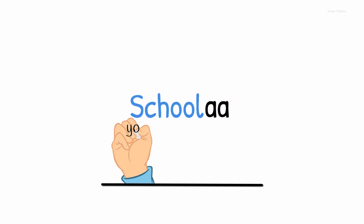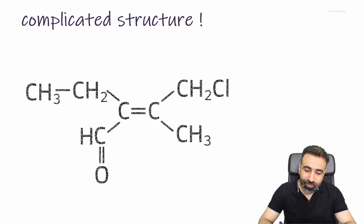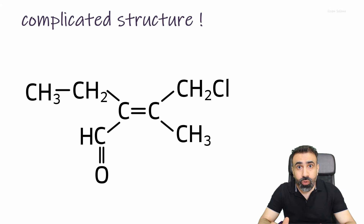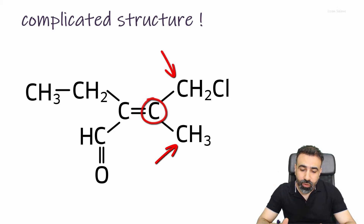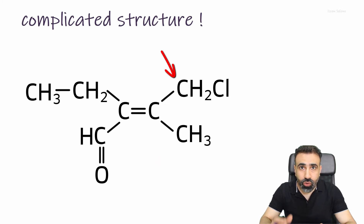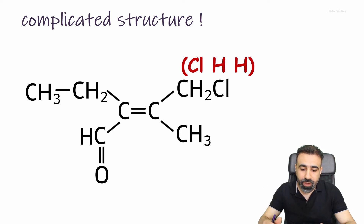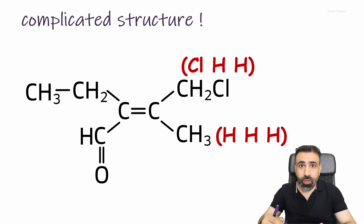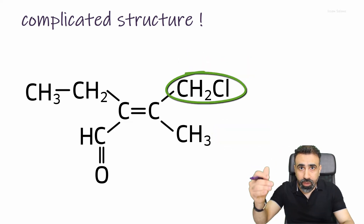Are you ready for more complicated structures? When the carbon at one end of the double bond is connected to two carbons, we cannot distinguish them by atomic number alone, so we look at the atoms joined to those carbons. For example, on the right end, the carbon at the top is joined to chlorine and two hydrogens (Cl, H, H), while the carbon at the bottom is joined to three hydrogens (H, H, H). Comparing them, the top carbon has higher priority because chlorine has a higher atomic number than hydrogen.